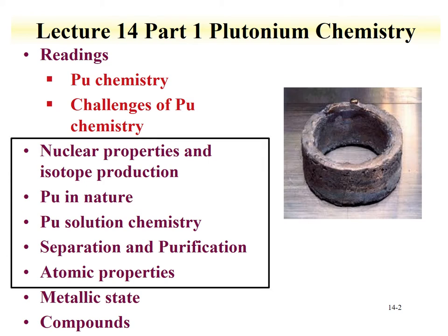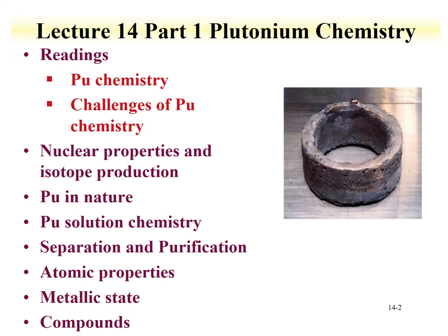Lecture 1 is going to cover nuclear properties and isotope production for plutonium. We're going to discuss plutonium in nature — extremely small amounts — and describe where it comes from and its origin. We'll also talk about plutonium solution chemistry, exploring trends in the actinides where we see the yl-oxygen pairing with plutonium-5 and plutonium-6. However, plutonium-4 is the dominant oxidation state, so we went from uranium-6, neptunium-5, to plutonium-4. Plutonium has multiple oxidation states, and the ability to manipulate oxidation states was really exploited in achieving separation of this element from other actinides.